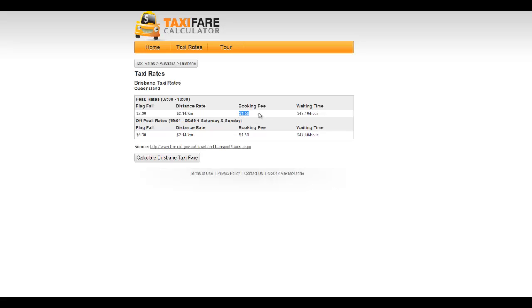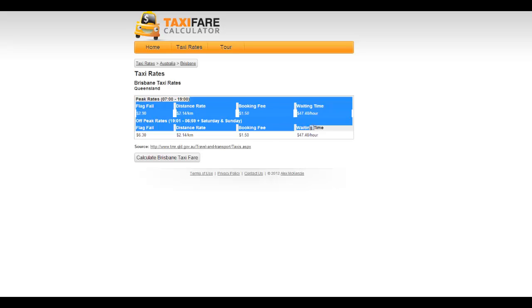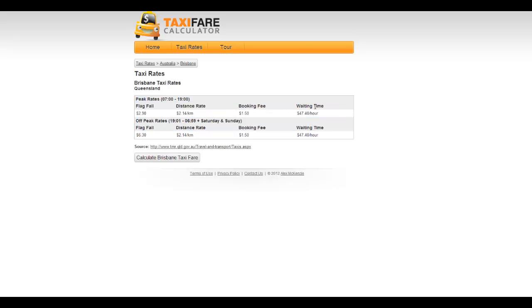And the distance rate is $2.14 per kilometer. And the booking fee, I guess, you have to pay if you have booked for the taxi beforehand. And the waiting time, we're just going to ignore the booking fee and the waiting time. Okay, so we're just going to assume that all you have to pay for a taxi is the flag fall and the distance rate,